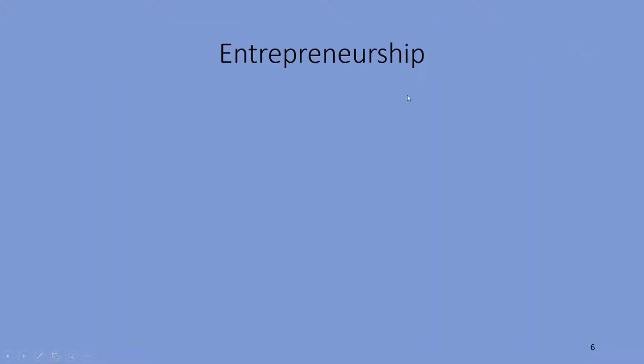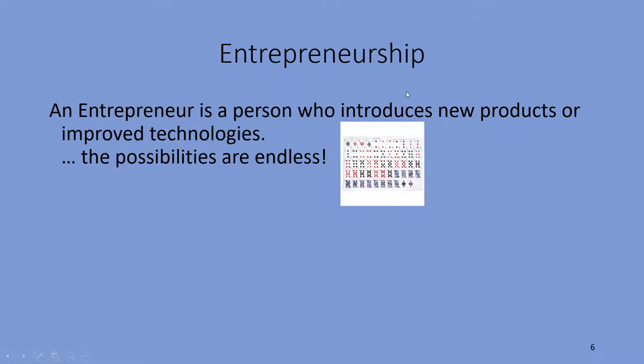With that in mind, let's segue a little into entrepreneurship. An entrepreneur is a person who introduces new products or improved technologies. The thing I want you to know about entrepreneurship is that the possibilities of what you could invent or produce are fairly endless. Everyone likes to say that the greatest inventions have already been invented, or how are you supposed to come up with something new? But the possibilities of new stuff are endless. And when I talk about entrepreneurship, I'm not just talking about new products — it could be new ways of producing existing products that are faster, cheaper, or less costly. To give you a sense of how endless the potential ideas are, let's go through a quick mathematical example.